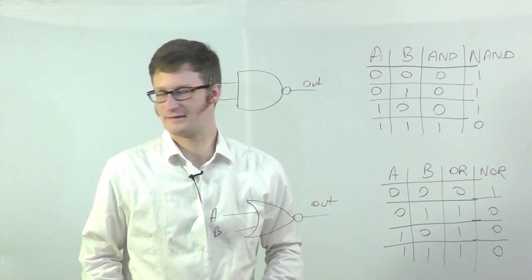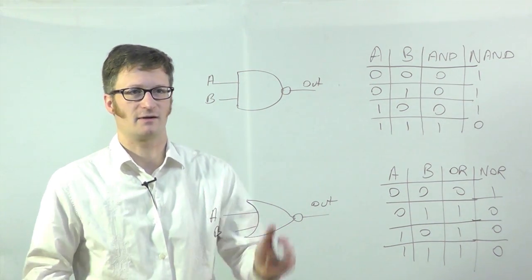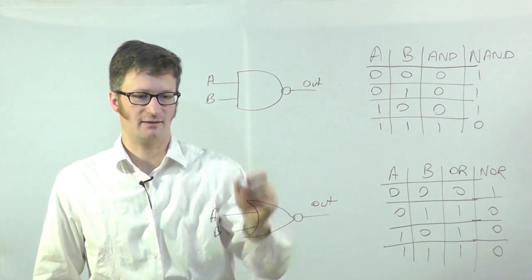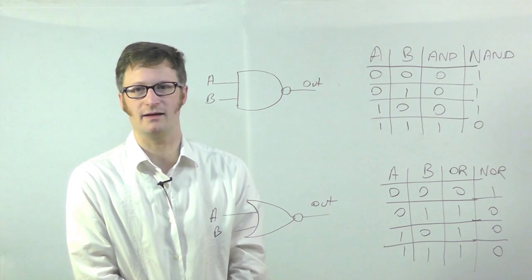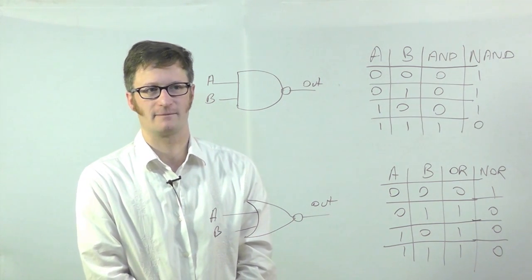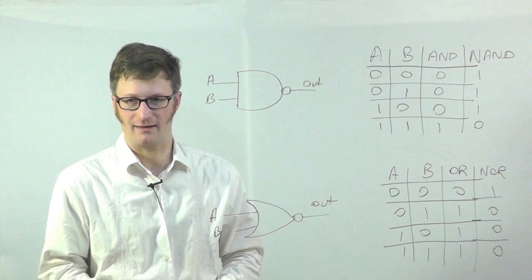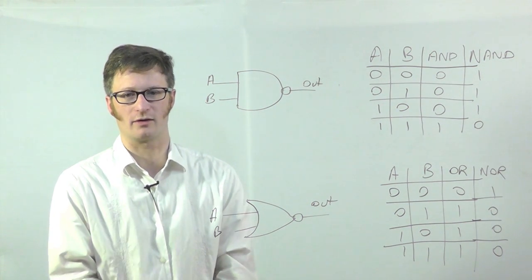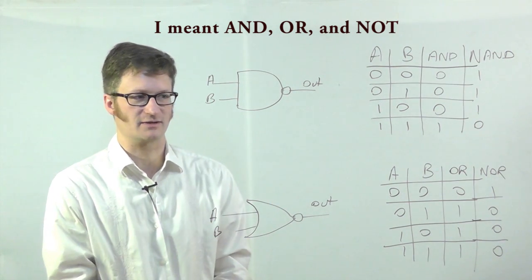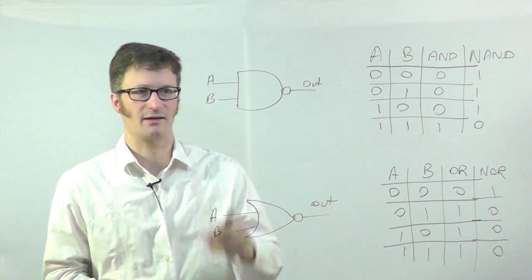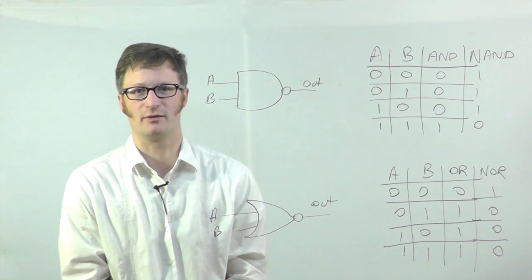The reason that NAND and NOR are special gates is because from groupings of just NAND, and groupings of just NOR, you can create any of the other logic gates. Whereas otherwise it would take an AND, an OR, and a NOT gate to build any logic function. I will show that in a later video after I've shown a few other things.